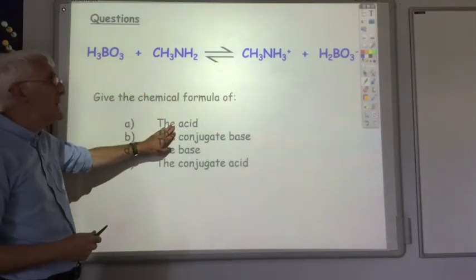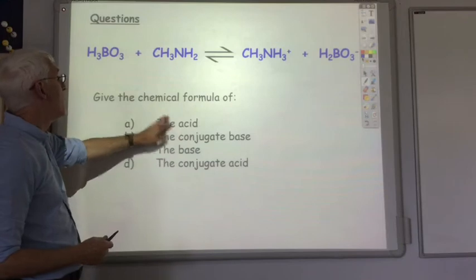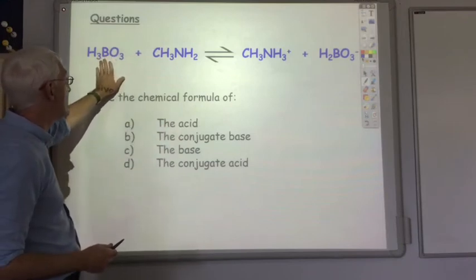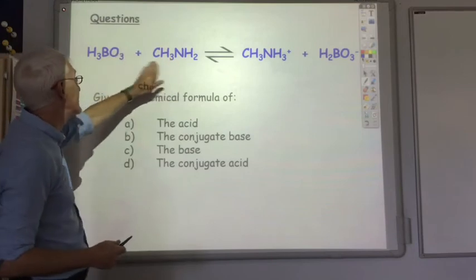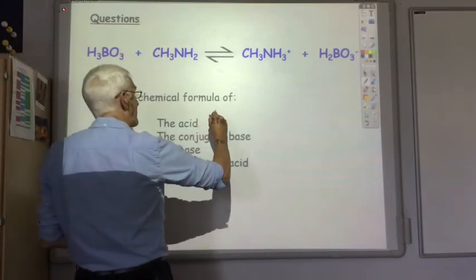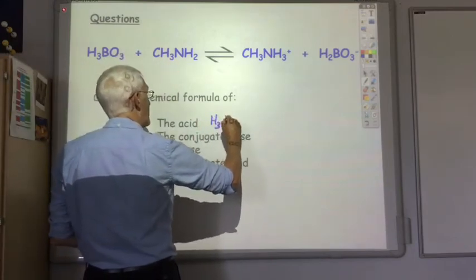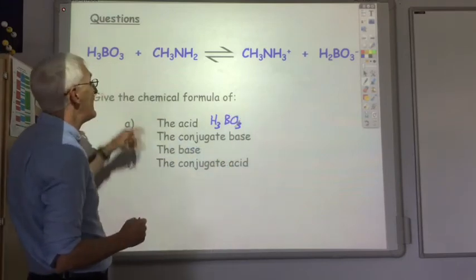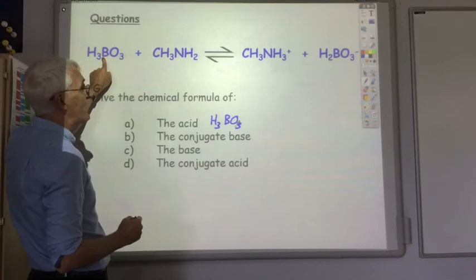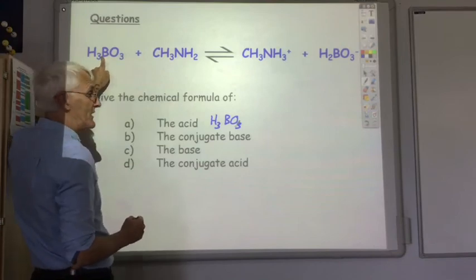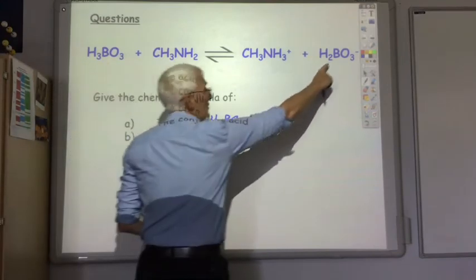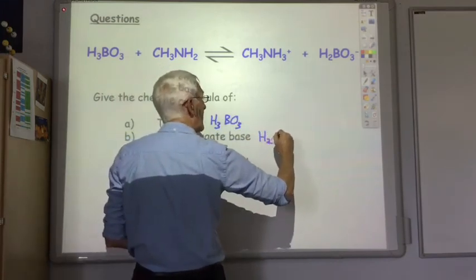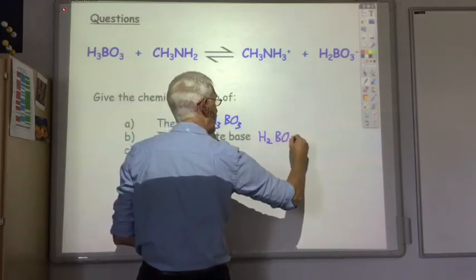The acid. What's donating the proton? Well, H3BO3 is donating the proton to this substance here. So H3BO3 is the acid. It's a proton donor. And what's left over after it's donated the proton is the conjugate base, which is this thing over here, H2BO3-.